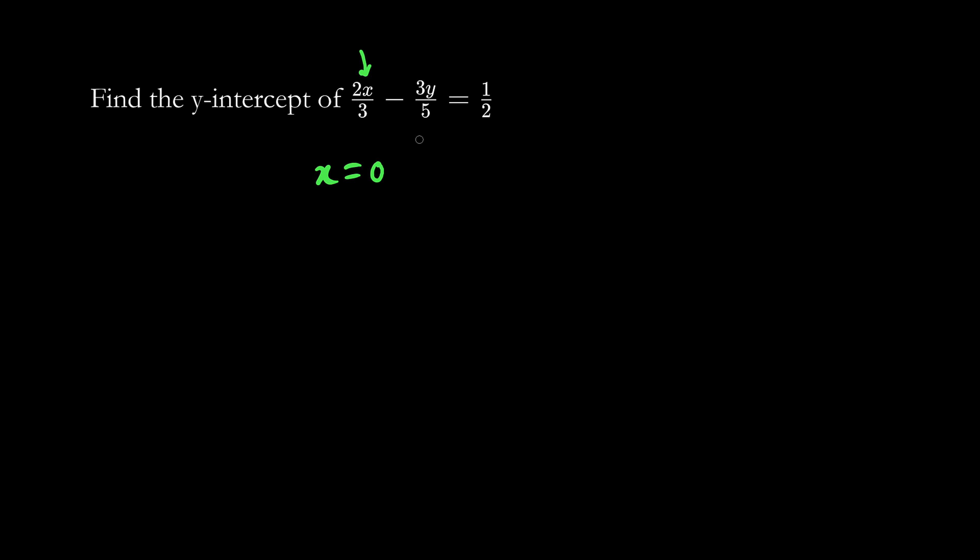So what we have left is minus 3y/5 equals 1/2, and here we can multiply both sides by 10 or cross multiply. We'll just cross multiply.